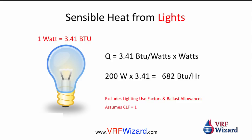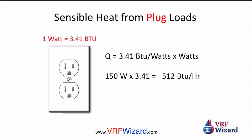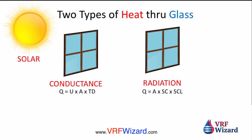For sensible heat from lights, one watt equals 3.41 BTUs. We're not going to figure out usage factors, ballast allowances, and we'll assume the CLF is 1 for now. We just need to know how many watts of lights are burning and convert that into BTUs to size our system and figure out CFM. Similarly for plug loads, we use a straight wattage multiplied by 3.41 BTUs to get the total BTUs.